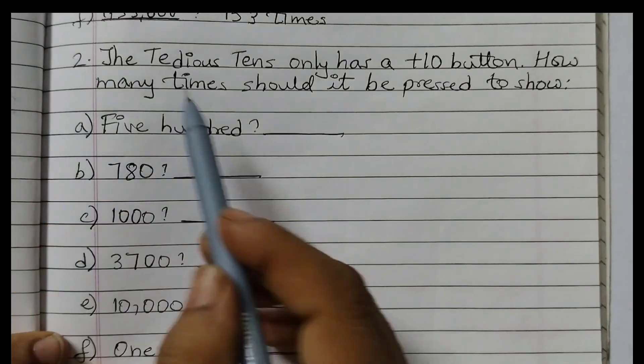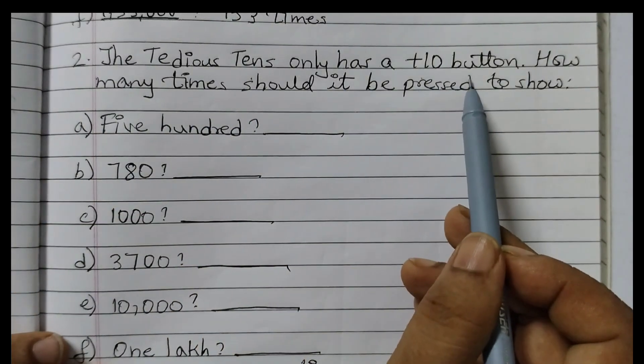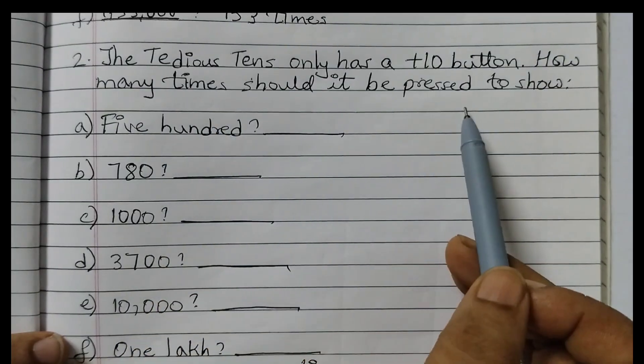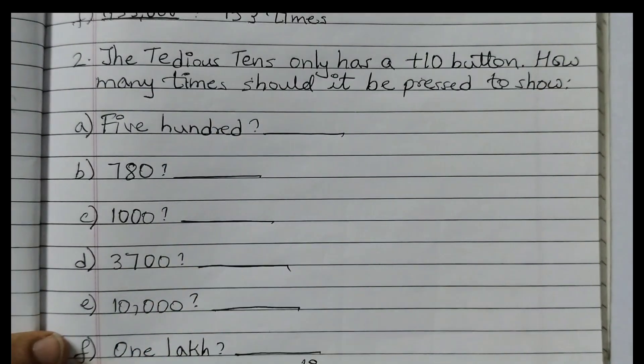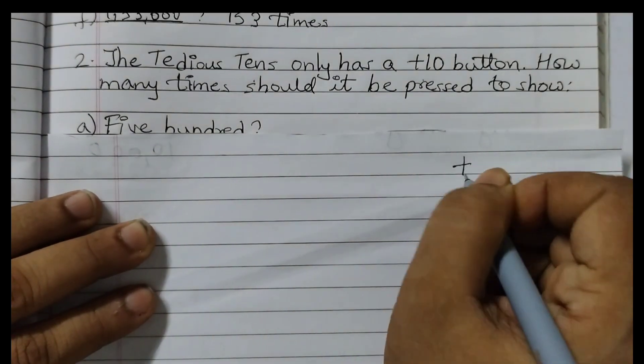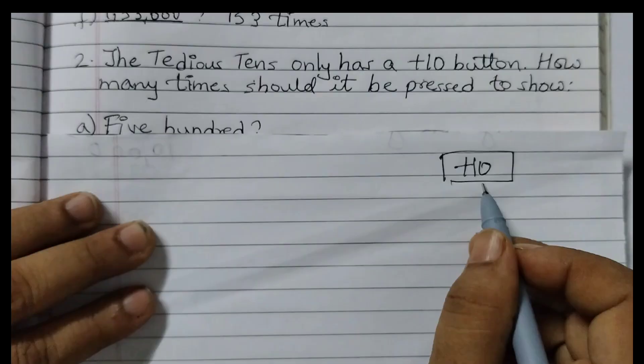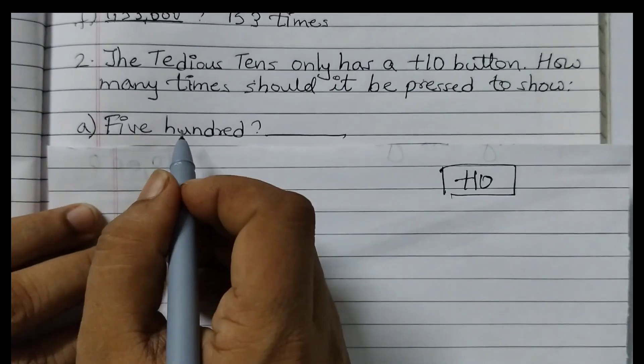Question number 2. The TDS 10s only has a plus 10 button. How many times should it be pressed to show 500? Now this special calculator has a plus 10 button. Every time you press this button, 10 would be added to it. So 500.